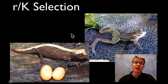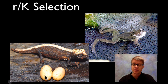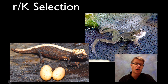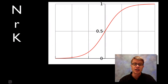Hi, it's Mr. Andersen. In this podcast I'm going to talk about R and K selection, or R selected and K selected species. Right here we've got a chameleon female that's just laid two eggs. Right here we have a frog that's just laid thousands of eggs. One of these is R selected, one is K selected. If you know exactly which is which right now, you probably don't need to watch the rest of the video. For those of you that are left, let me talk about R and K selection.